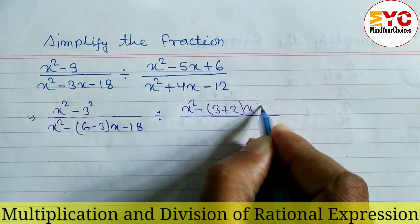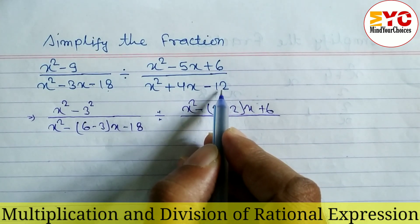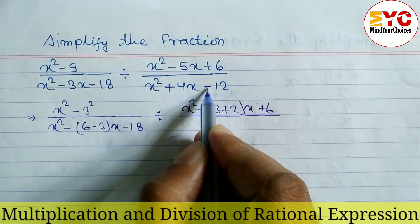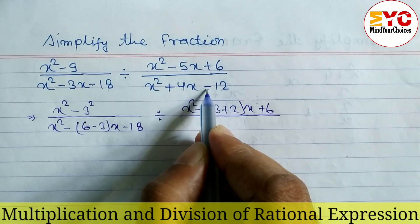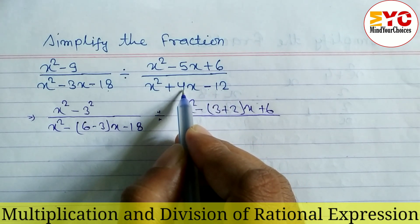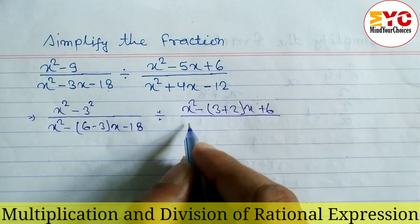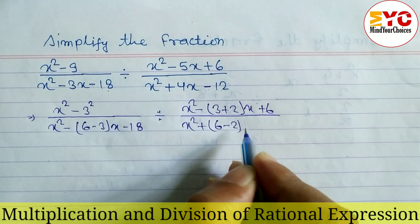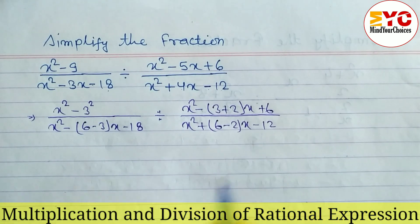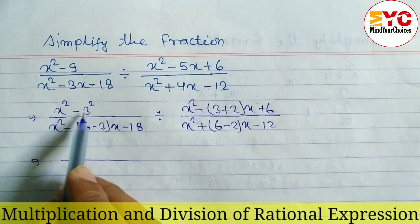So we write 3 plus 2, giving x plus 6. Similarly, multiplying to get 12 and subtracting to get 4: the factors are 6 and 2, since 6 times 2 is 12 and 6 minus 2 is 4. So we write in place of 4: 6 minus 2, giving x minus 12.